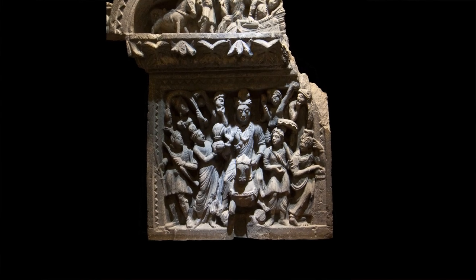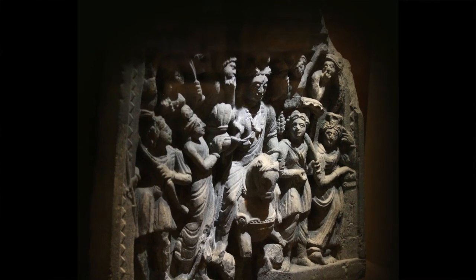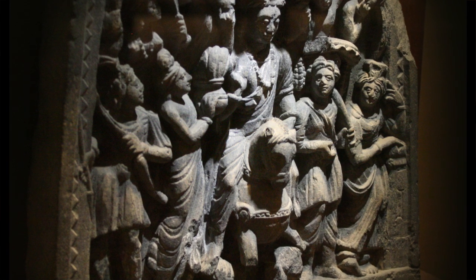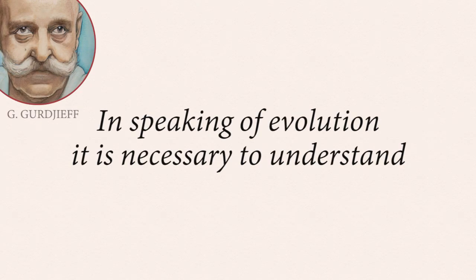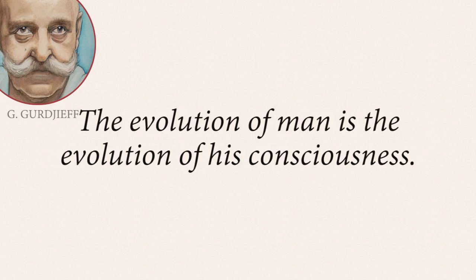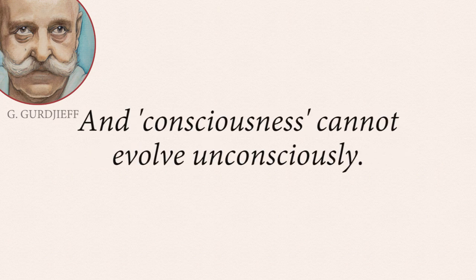This verification that consciousness adds onto functions as a separate dimension is evocative of a Buddhist image from the story of the life of Prince Siddhartha, of a moment called The Great Departure. In this particular scene, Siddhartha is mounted on his horse, captured in the moment where he's leaving his father's kingdom. Notice how, when viewed from the side, the muzzle of his horse pierces out from the two-dimensional space of the relief into a new third dimension. In speaking of evolution, it is necessary to understand that no mechanical evolution is possible. The evolution of man is the evolution of his consciousness, and consciousness cannot evolve unconsciously.